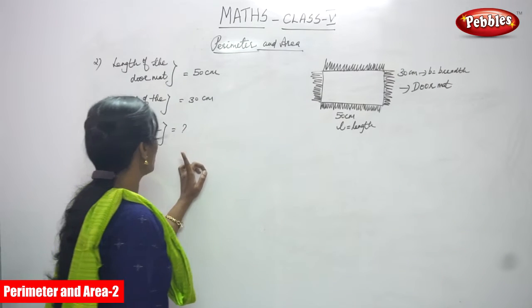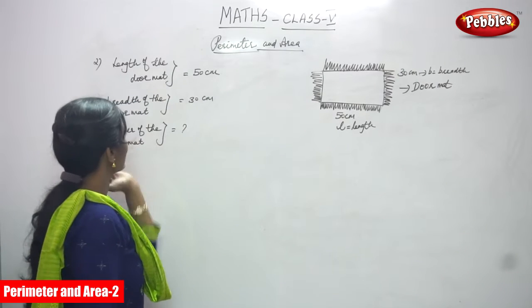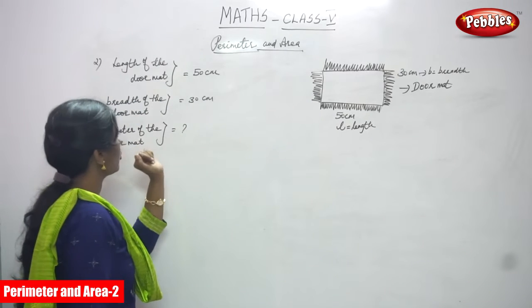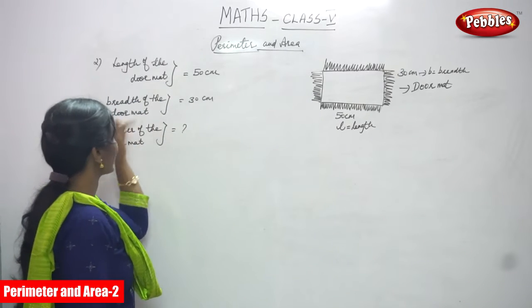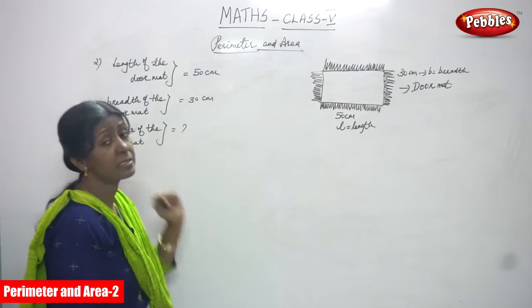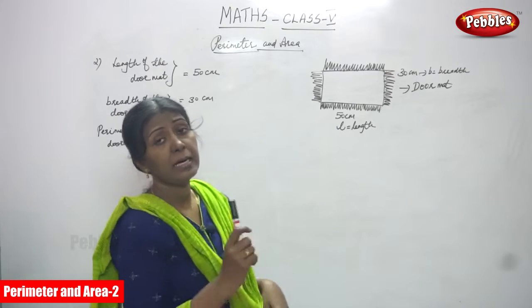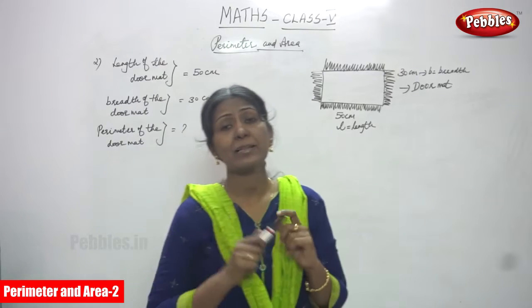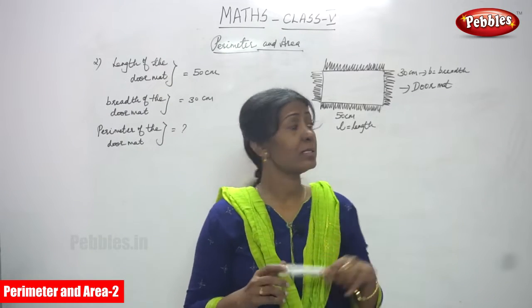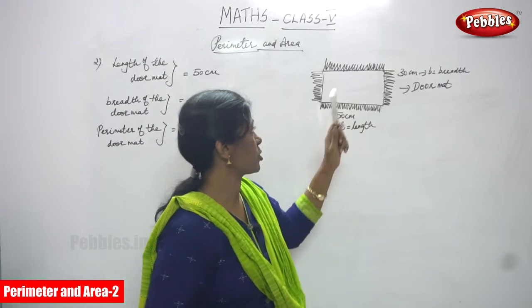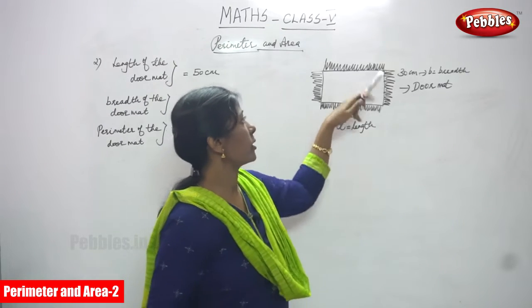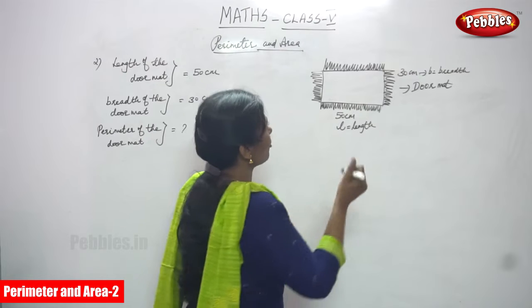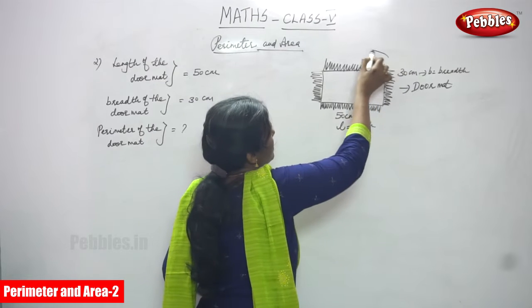So the length of the doormat is 50 cm and the breadth of the doormat is 30 cm. This is the doormat picture. So what we are going to do is find out the perimeter.